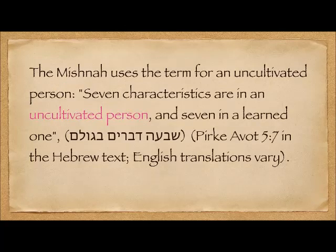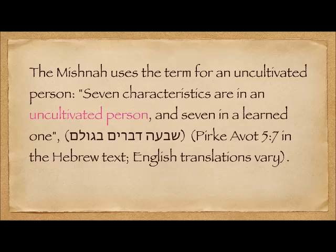The Mishnah uses the term for an uncultivated person, and an early citation is from Pirkei Avot: 'Seven characteristics are there in an uncultivated person — in a Golem (or in Yiddish, a Gollum) — and seven in a learned one.' The Hebrew is shiva dvarim bagolem, seven things that are in the Golem. Let's look at the whole text.